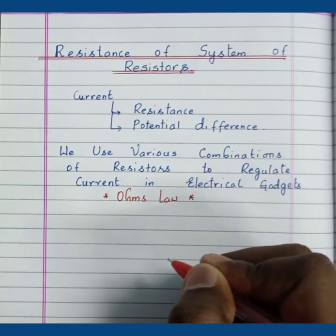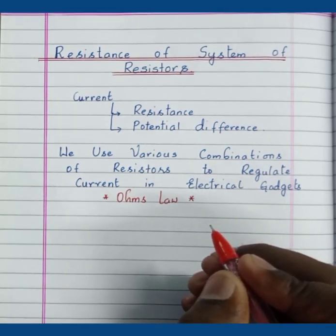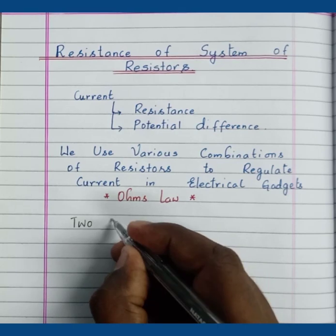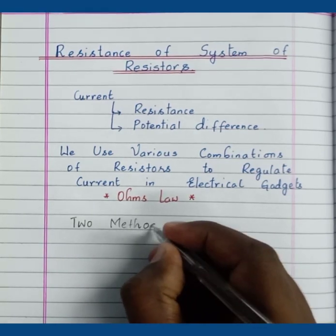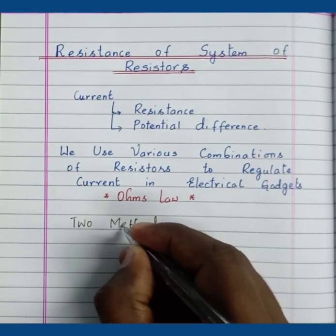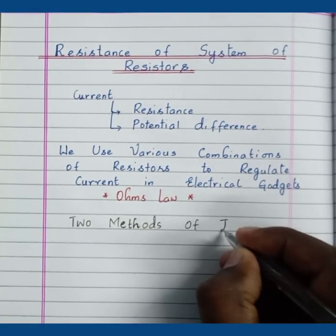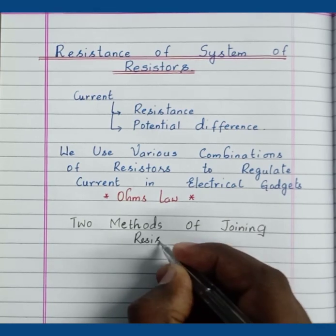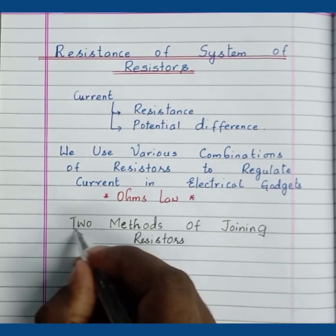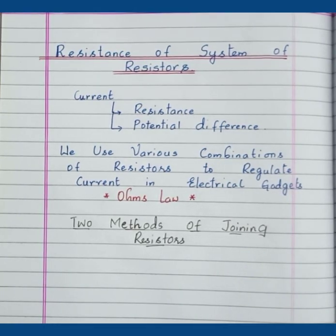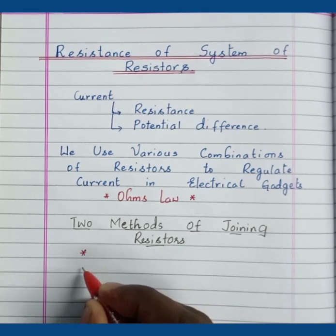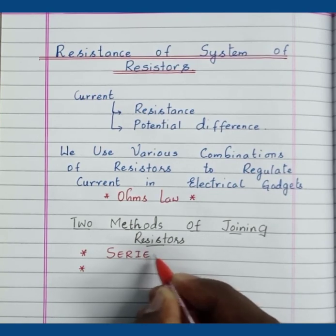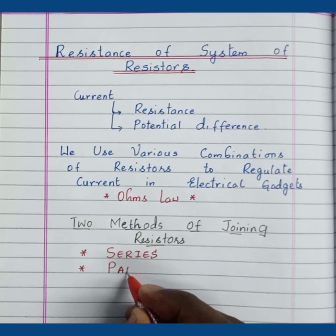We have two methods of joining resistors. We can connect resistors in two ways: the first method is series connection, and the second method is parallel connection.